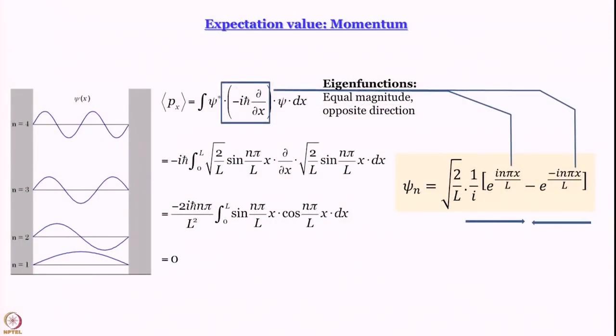What we also learn is that eⁱᵏˣ is a good eigenfunction for the linear momentum operator, with eigenvalue -kℏ. This is very important and we will come back to it. Whenever we have a sine or cosine function, these are always linear sums of eⁱᵏˣ and e⁻ⁱᵏˣ terms, meaning any sine or cosine function carries equal contributions from momenta moving in both directions. This has some profound implications that we will come back to later in the course.